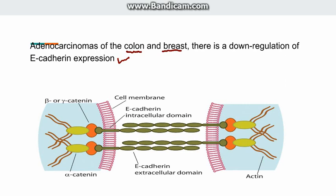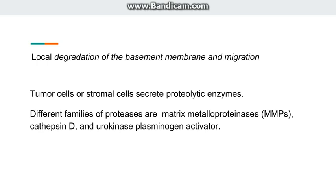E-cadherin is especially important in adenocarcinomas of the colon and the breast. In the diagram we can see two cells adhered to each other with the help of E-cadherin, along with alpha-catenin and beta-catenin. Any variations in E-cadherin expression — the downregulation of E-cadherin or alpha-catenin — leads to more spread of carcinomas.